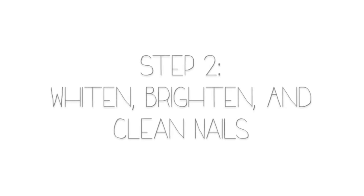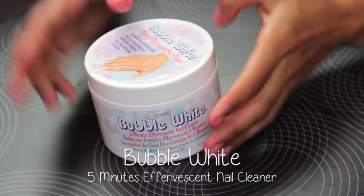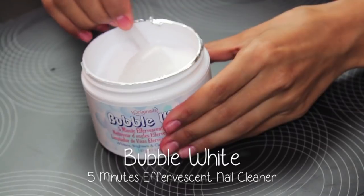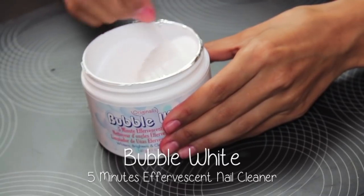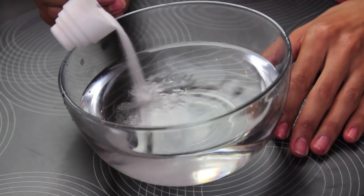So for step two, I'm just going to brighten, whiten, and clean my nails with this five-minute effervescent nail cleaner. Now all I do is just take a scoop into a bowl of water and you dip your nails in there for about five minutes.